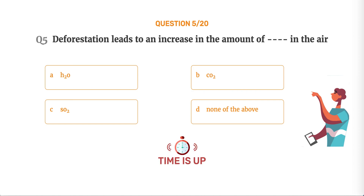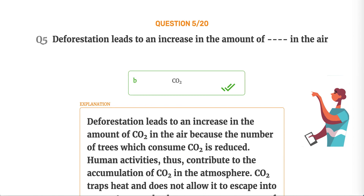The correct answer is Option B, CO2. Deforestation leads to an increase in the amount of CO2 in the air because the number of trees which consume CO2 is reduced. Human activities thus contribute to the accumulation of CO2 in the atmosphere. CO2 traps heat and does not allow it to escape into space. As a result, the average temperature of the Earth's atmosphere is gradually increasing. This is called global warming.